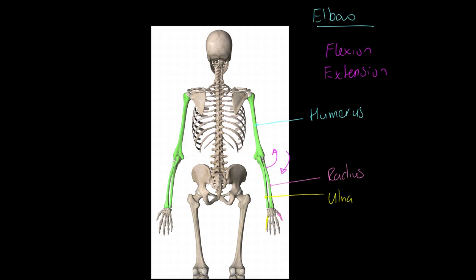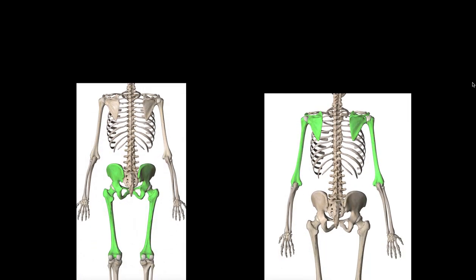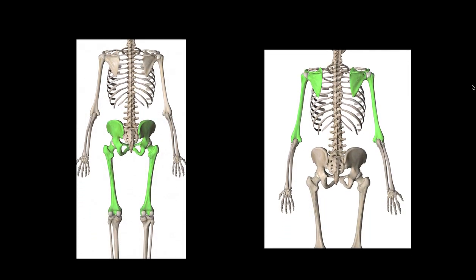Let's look at our ball and socket joints. I've included two: the hip and the shoulder. A couple of things to notice - these are both ball and socket joints, but look at the ball at the top of the humerus.